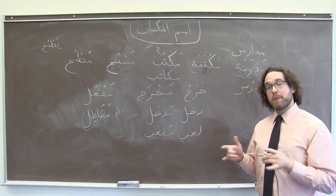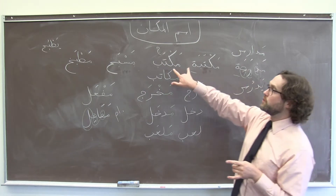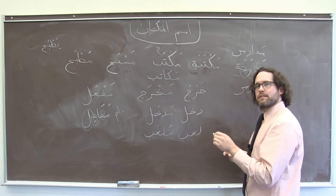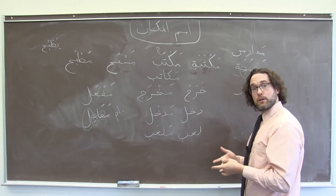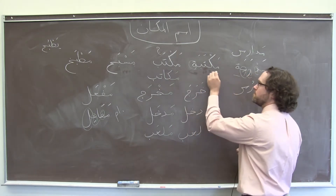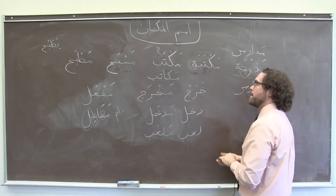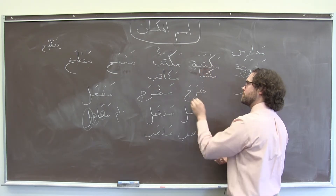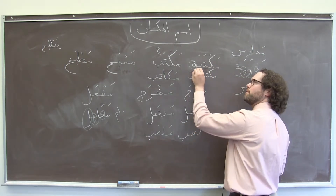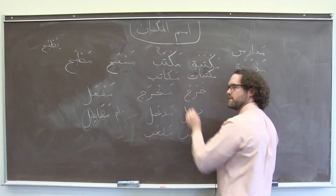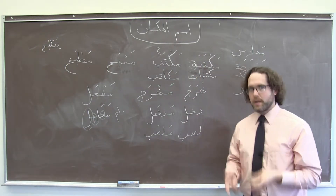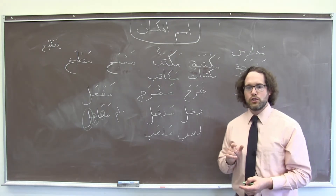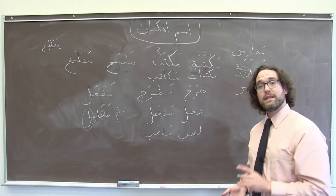Occasionally, especially if we have two variations, you will get an اسم مكان with a تاء مربوطة that uses the regular feminine plural ending. In this case, the plural of مكتبة — libraries — would be مكتبات. It doesn't happen often, but we need to be prepared for it and recognize, especially when we learn a new اسم مكان, that we might need to check on the plural.